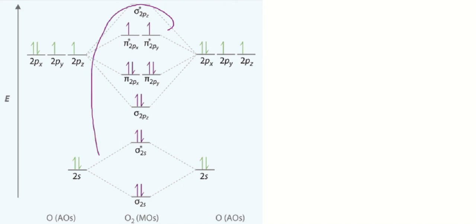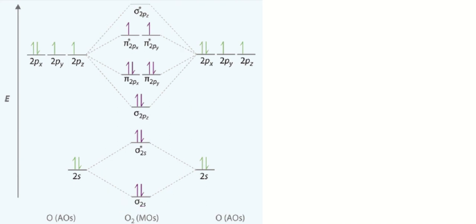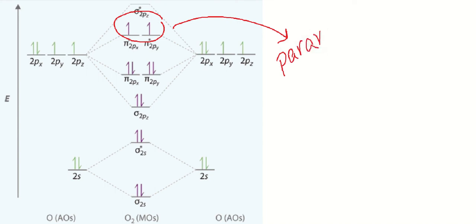Notice the purple arrows in the center — don't worry about the other stuff. Those represent the electrons in the molecular orbitals of the O2 molecule. This theory correctly predicts the two unpaired electrons in O2 and its biradical nature.